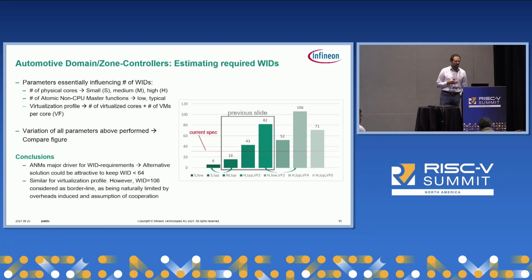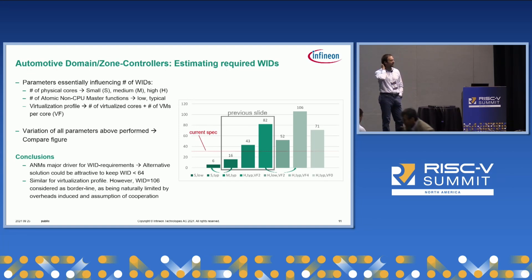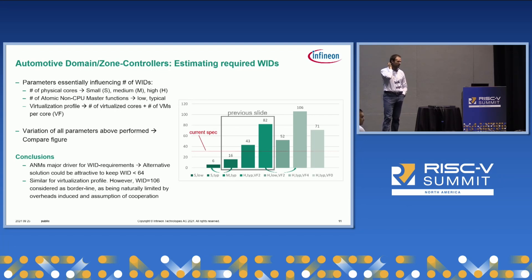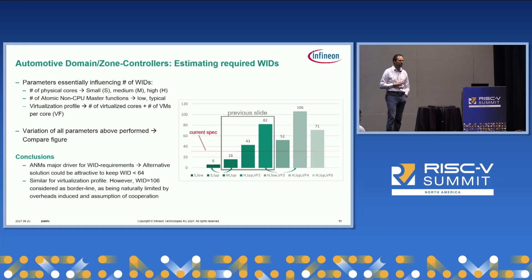From a realistic perspective, and also when looking at the cost function, we can bind the requirement to something like 64 to 96 IDs from a zone controller perspective. The 106 is actually borderline from an integration complexity perspective and also with respect to satisfying real-time requirements.